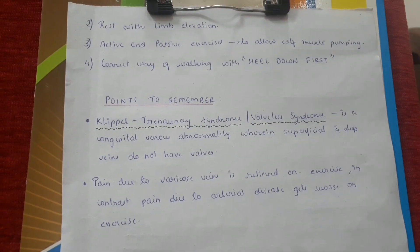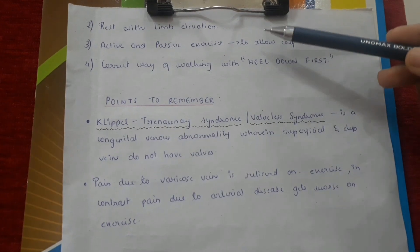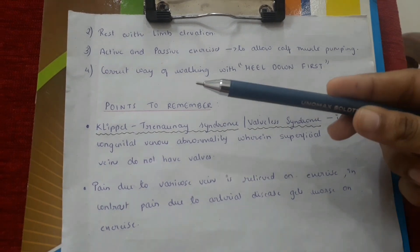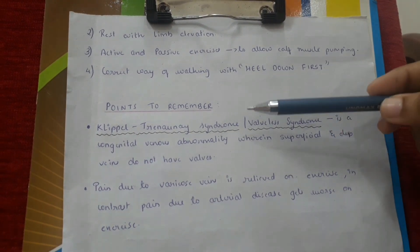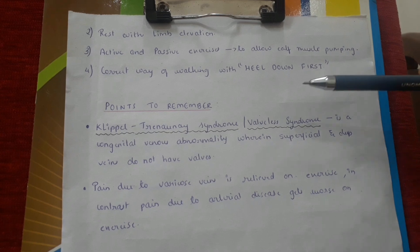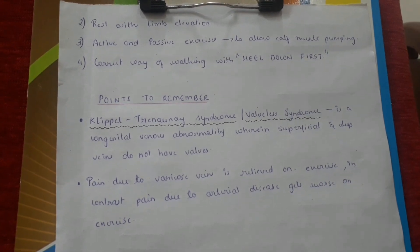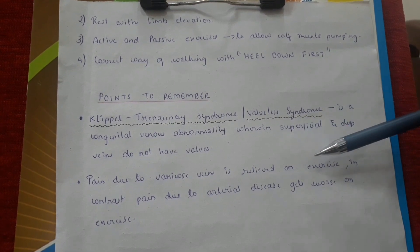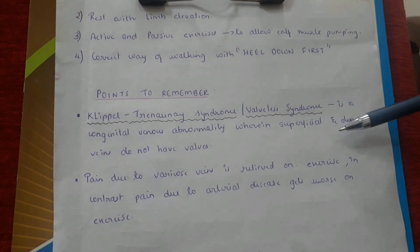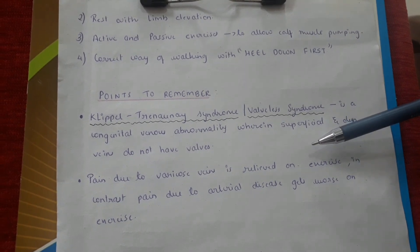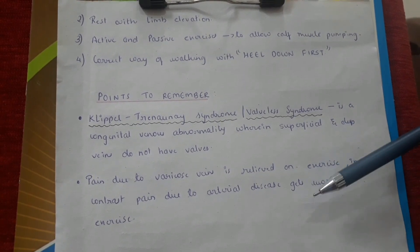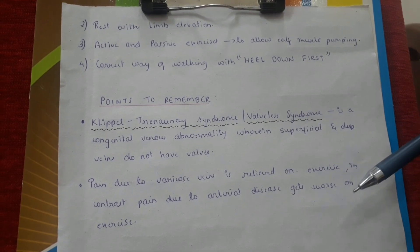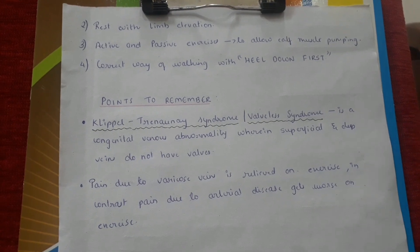Other conservative management includes rest with limb elevation, active and passive exercises to allow calf muscle pumping, and ensuring the patient walks correctly — heel down first. Key points to remember: the Klippel-Trénaunay syndrome is also called the valveless syndrome; it is a congenital venous abnormality wherein the superficial and deep veins do not have valves. Pain due to varicose veins is relieved on exercise, whereas pain due to arterial disease gets worse on exercise.